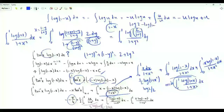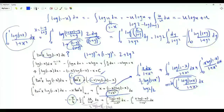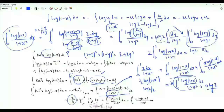This logarithm splits as log 2 minus log(1 plus y), giving two integrals. We get log 2 times the integral from 0 to 1 of 1 over (1 plus y squared), minus the integral from 0 to 1 of log(1 plus y) over (1 plus y squared). This second integral is exactly what we have on the left-hand side but with a minus sign, so 2 times the integral from 0 to 1 of log(1 plus x) over (1 plus x squared) equals log 2 times pi over 4. Therefore this integral equals pi log 2 over 8.